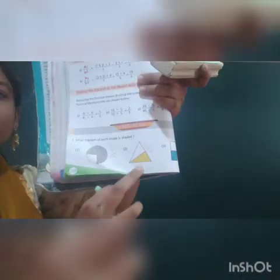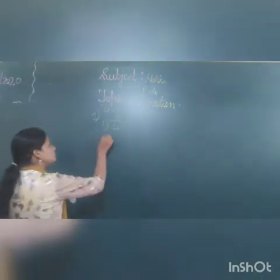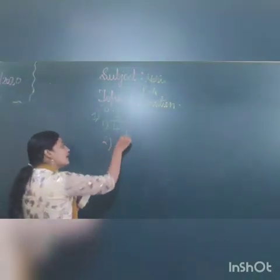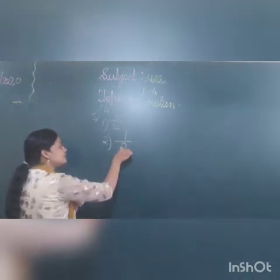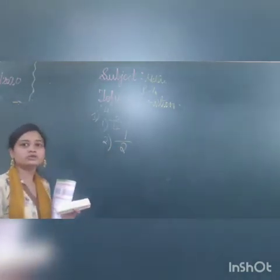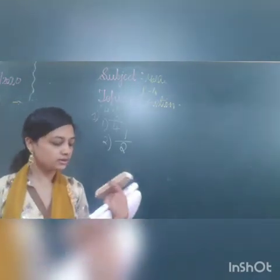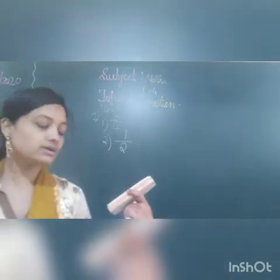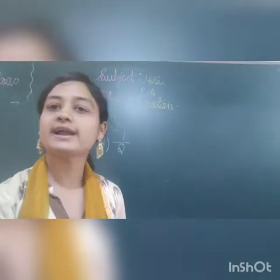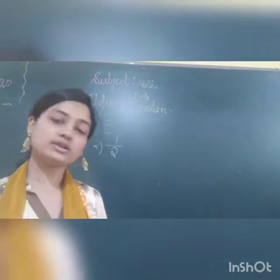Let us go for the second one. If you see, there is a triangle. How many parts are there? There are totally 2 parts. And how many parts are shaded? 1 part. So how will you write it in fraction form? Number of parts shaded divided by total number of parts — that is 1 by 2. The answer for the second one is 1 by 2. Can you answer the third one? I will ask you this question in an interactive session. You will try the third one yourself.